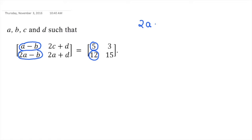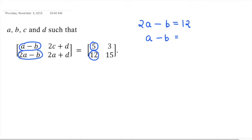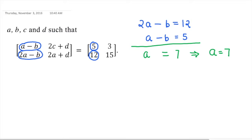2A minus B equal to 12, and A minus B equal to 5. Now just subtract these equations. 2A minus A gives A, the B terms cancel out, and 12 minus 5 is 7. So you will get A is equal to 7.